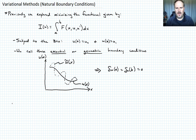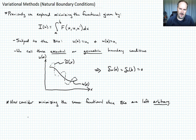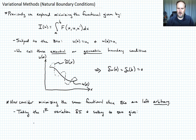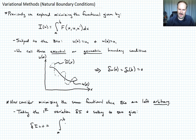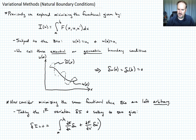Now let's consider minimizing the same functional when the boundary conditions are actually left arbitrary — so we don't force these essential boundary conditions. We'll use our newly developed delta operator, taking the first variation and setting it equal to zero. So delta i equals zero, and delta i is the integral from a to b of the first variation of f, which is del f del u times delta u plus del f del u prime times delta u prime dx. Note that with the delta operator there is no such thing as delta x. Let's call this equation one.